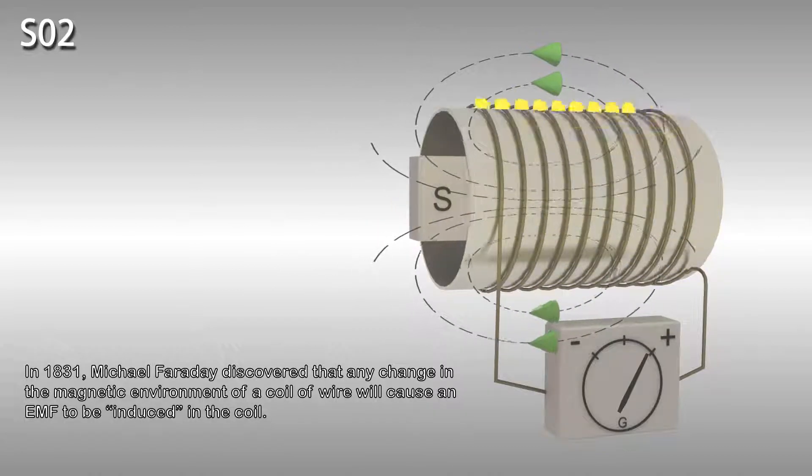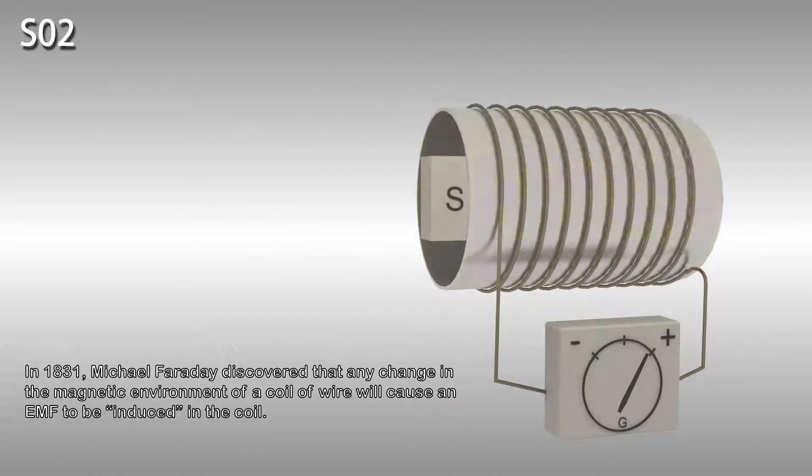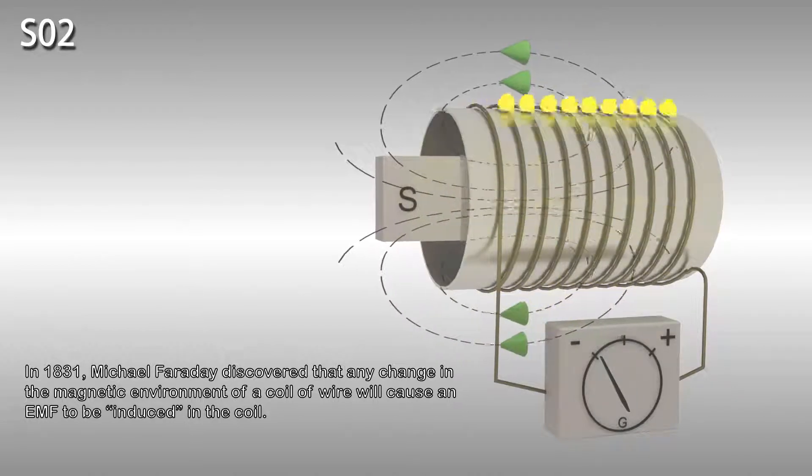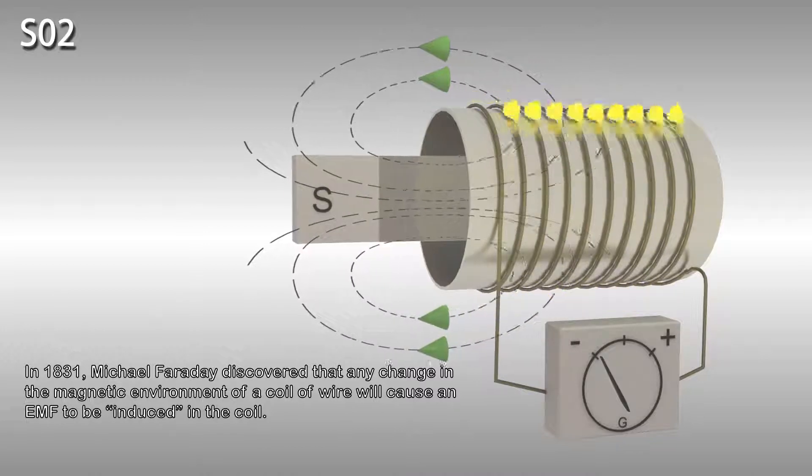In 1831, Michael Faraday discovered that any change in the magnetic environment of a coil of wire will cause an EMF to be induced in the coil.